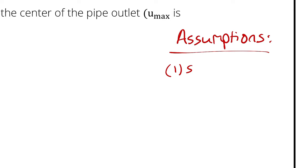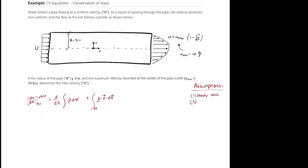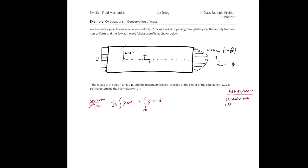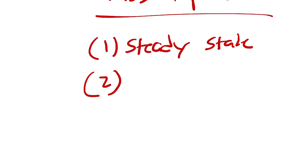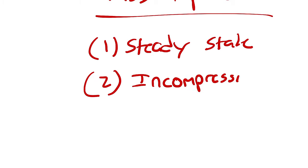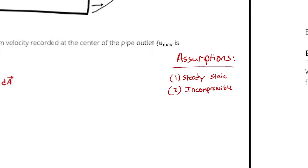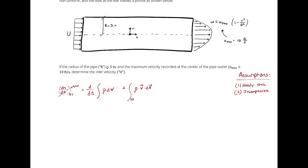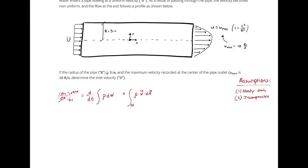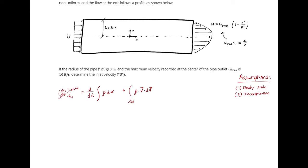I'm also going to assume incompressible flow, because we are analyzing water, and for our purposes all liquids are incompressible unless we have enough information to deduce otherwise. Incompressible implies that the density does not change at all. We were also told there is uniform flow at the inlet, so that's not really an assumption we need to make.